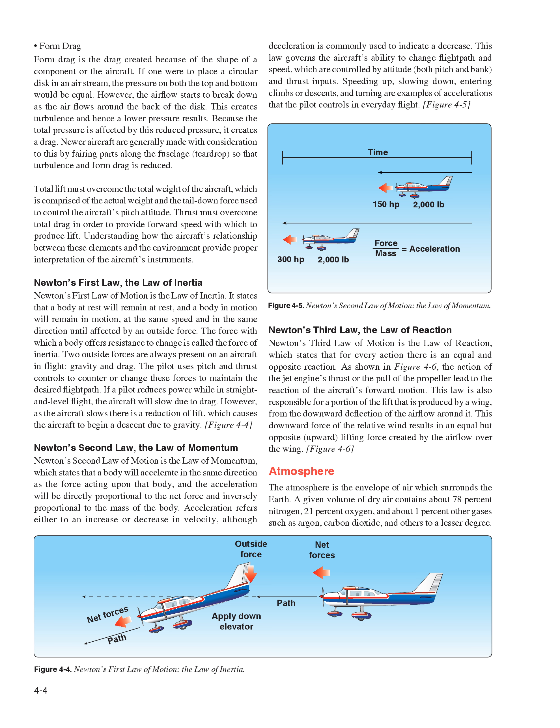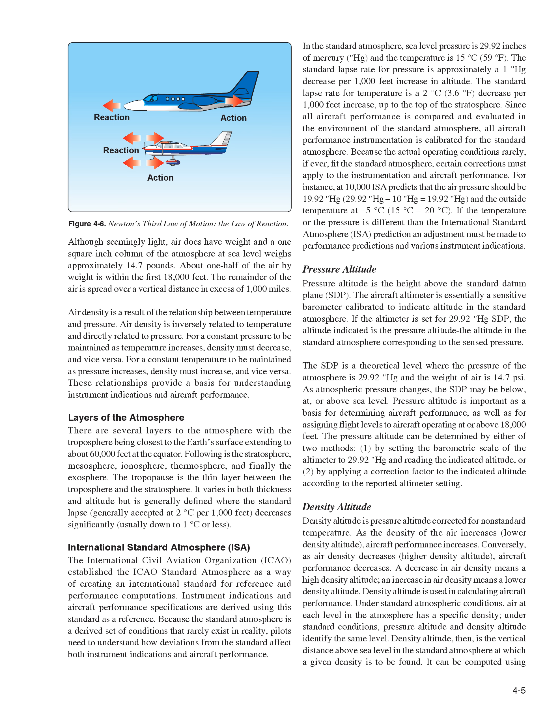Atmosphere. The atmosphere is the envelope of air which surrounds the Earth. A given volume of dry air contains about 78% nitrogen, 21% oxygen, and about 1% other gases such as argon and carbon dioxide. Air does have weight, and a 1-inch-square column of the atmosphere at sea level weighs approximately 14.7 pounds. About one-half of the air by weight is within the first 18,000 feet. Air density is a result of the relationship between temperature and pressure — inversely related to temperature and directly related to pressure. These relationships provide a basis for understanding instrument indications and aircraft performance.